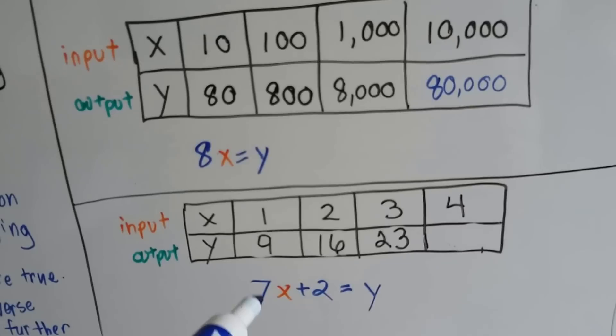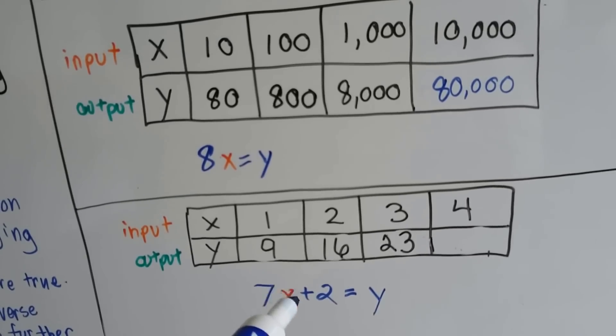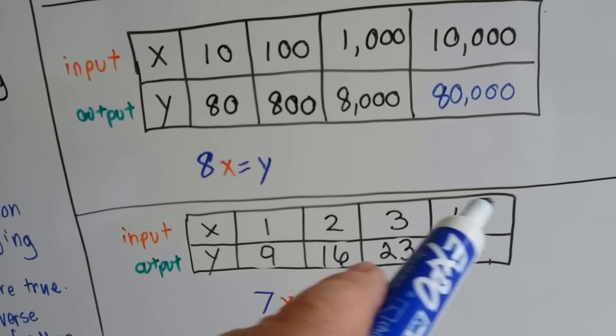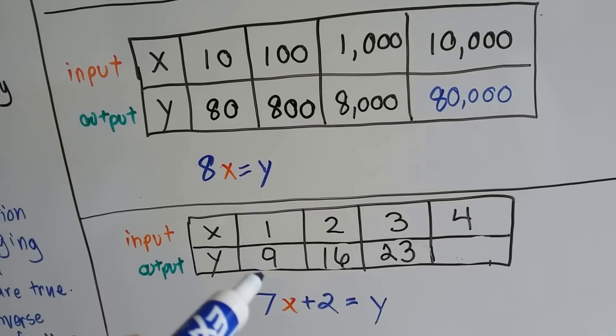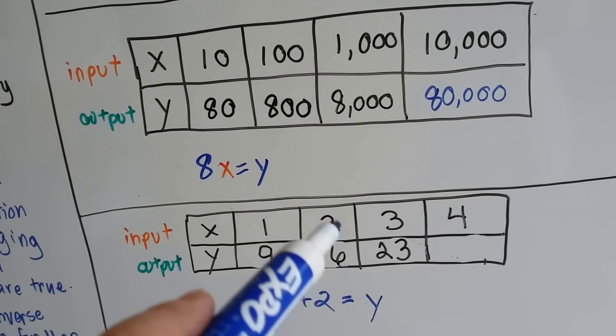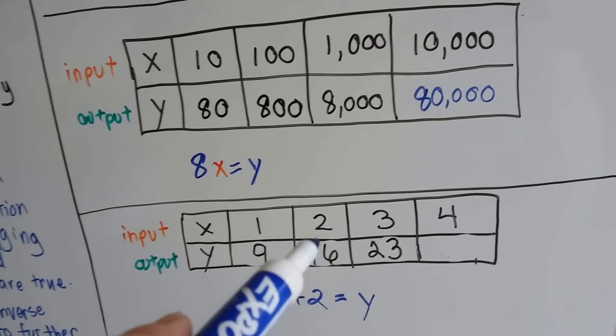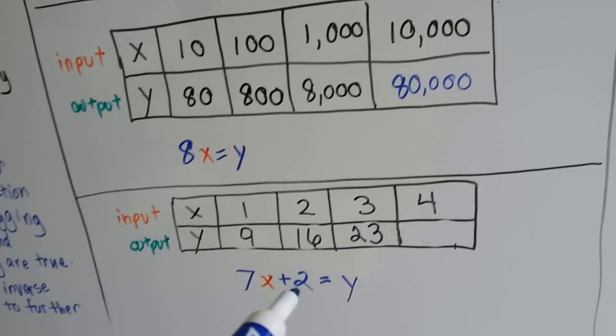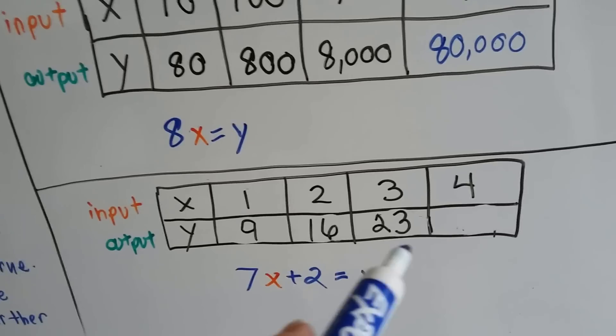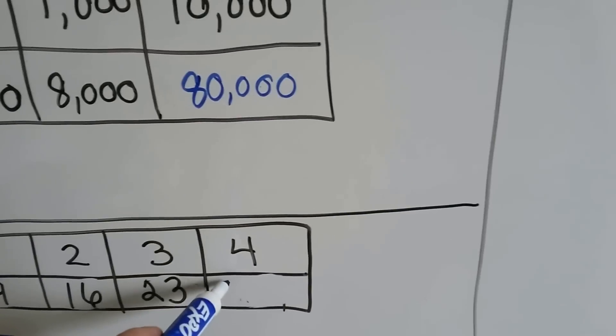And the actual equation is 7 times x, whatever's in these boxes, 1, 2, 3, 4, plus a 2. So 7 times 1 plus 2 is 9. 7 times 2 is 14, plus 2 is 16. So what's 7 times 4 plus 2? 7 times 4 is 28, plus 2 is 30. So we put a 30 here.